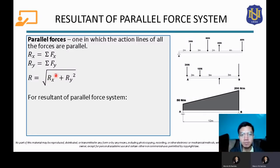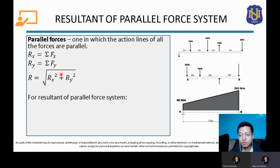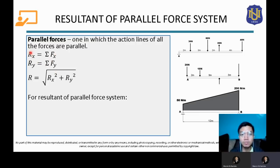RX is the summation of all the horizontal components of all the forces, and RY is the summation of all the vertical components. For a parallel force system, your forces will be either all horizontal or all vertical — it cannot be a combination, because that would no longer be a parallel force system. That would be a non-concurrent force system.